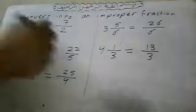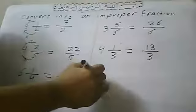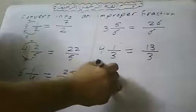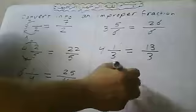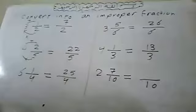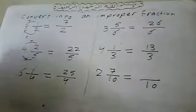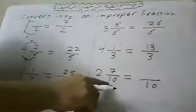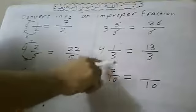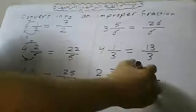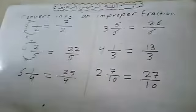Another example: two and seven over ten. First write ten. Ten times two equals twenty. Twenty plus seven equals twenty-seven. So the answer is twenty-seven over ten.